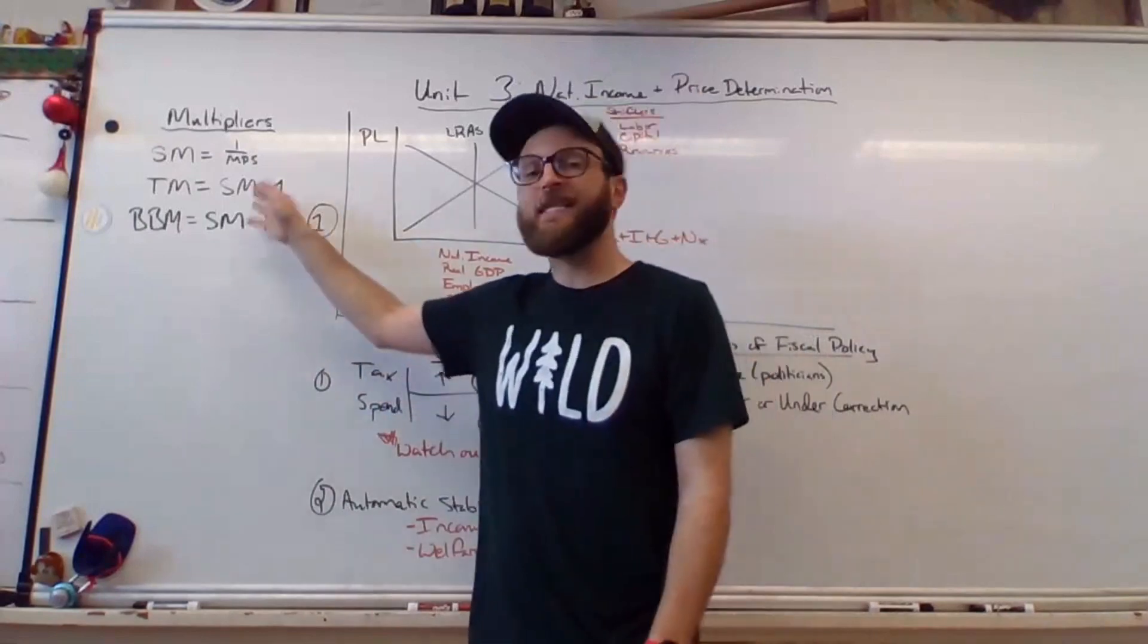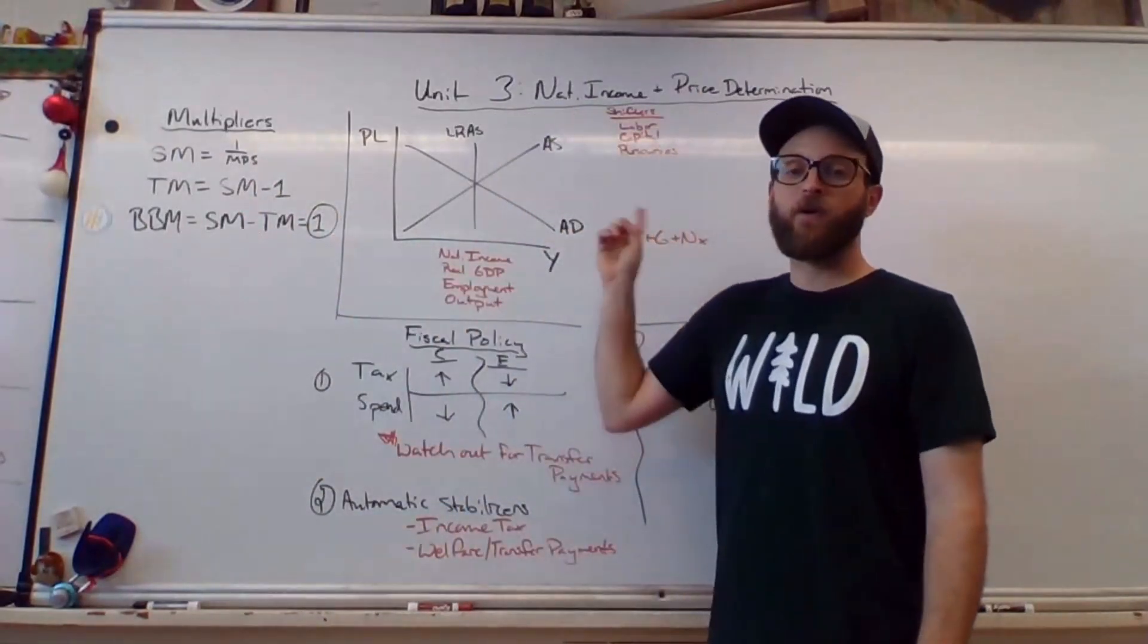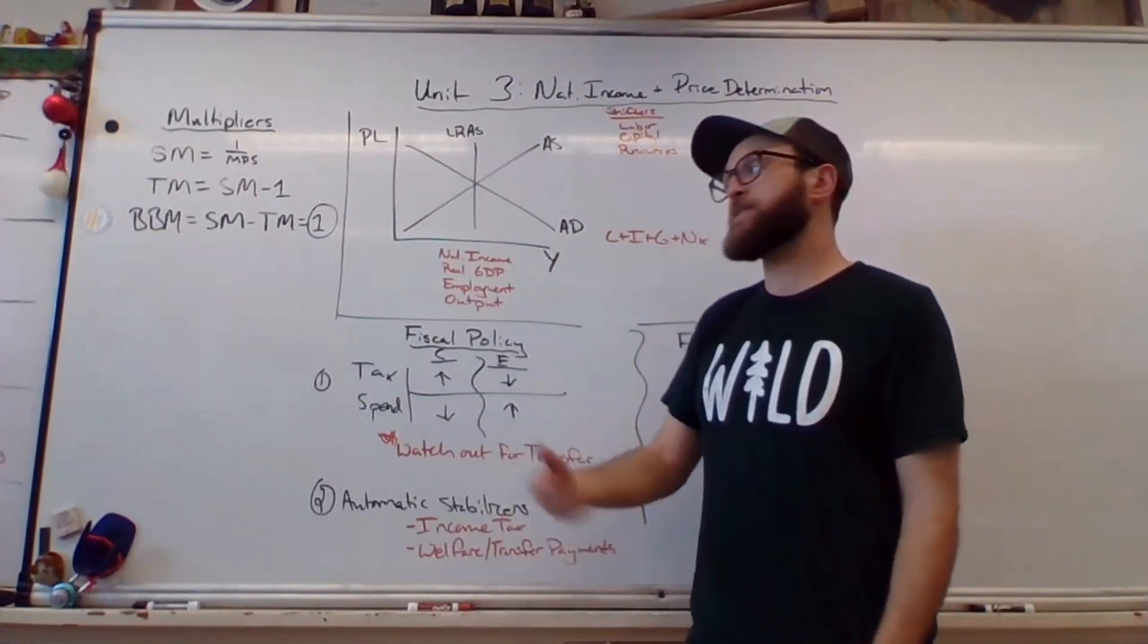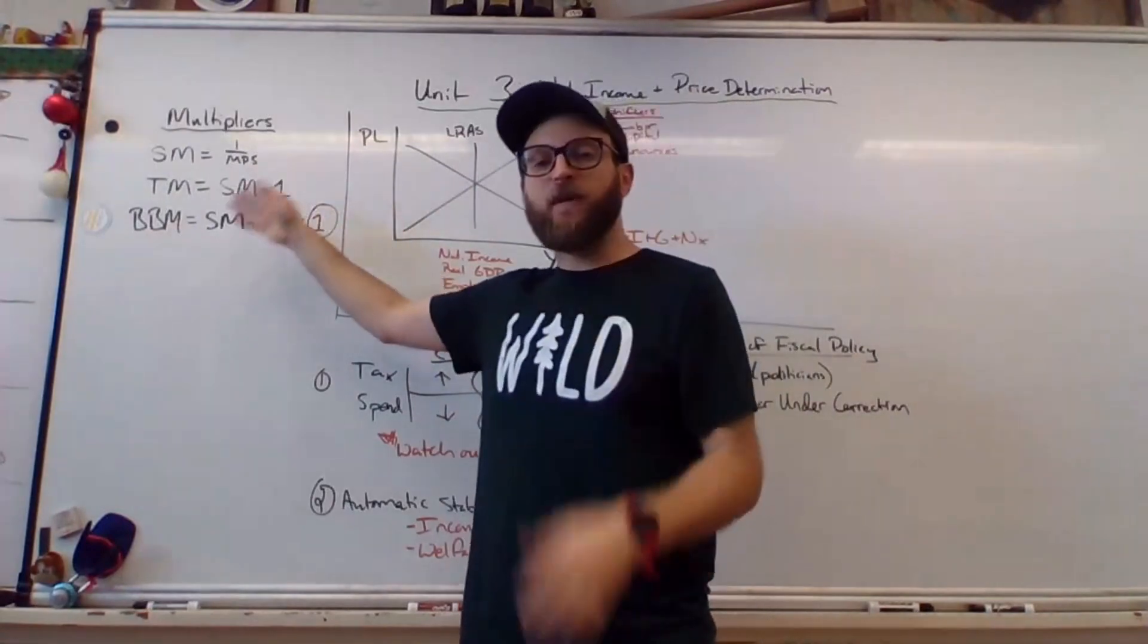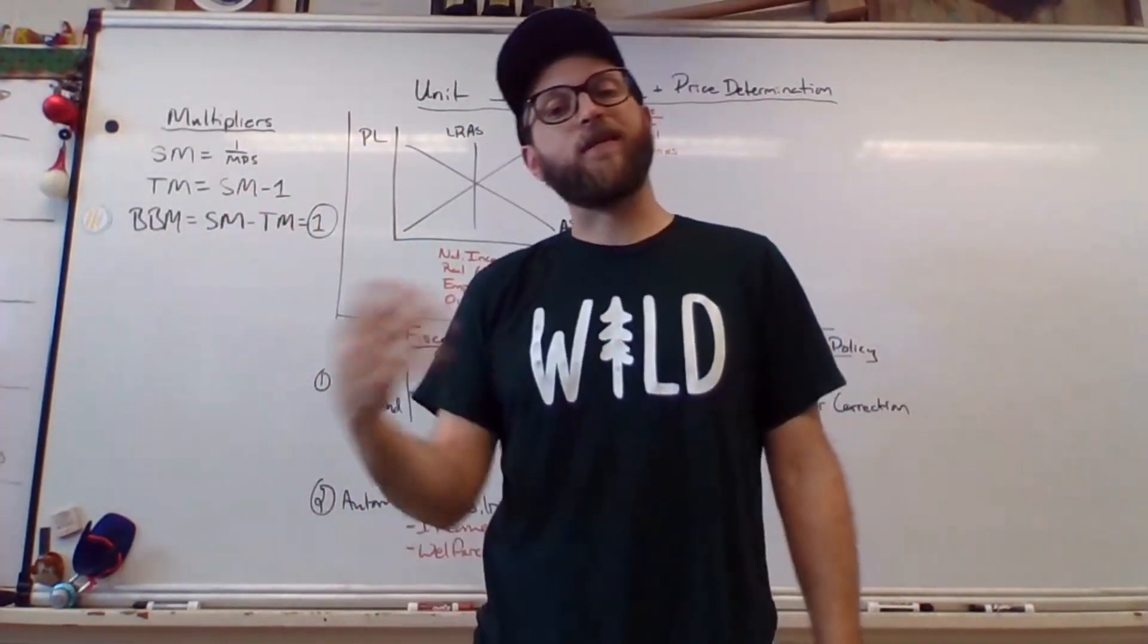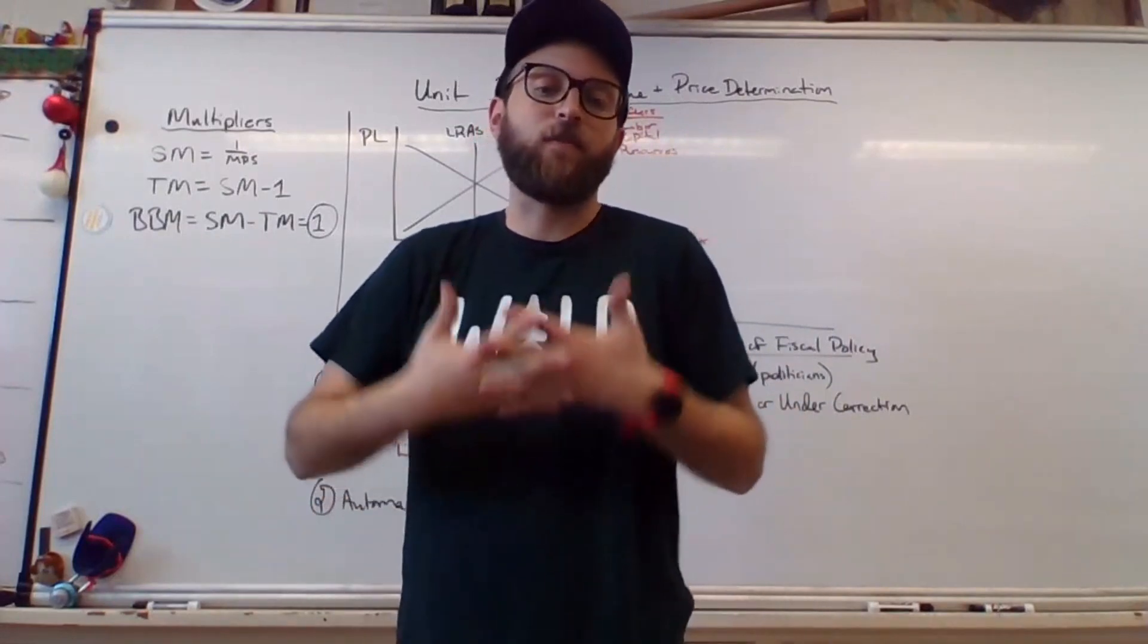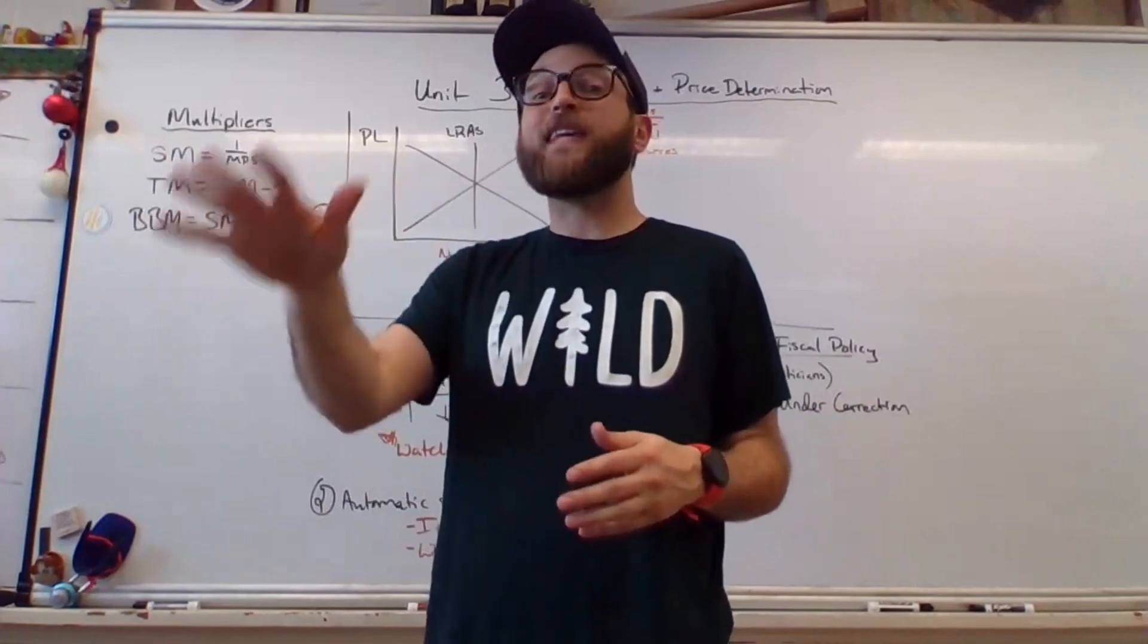The tax multiplier is less effective, because taxation is not a direct part of GDP. It requires you deciding that you're actually going to spend the tax savings, but you'll save some, so it's less effective. The tax multiplier is the spending multiplier minus 1, so if the spending multiplier is 10, the tax multiplier will be 9. And then finally is something called the balanced budget multiplier, which relies on this assumption that the government actually cares about their budget, and they will tax the people as much as they spend.